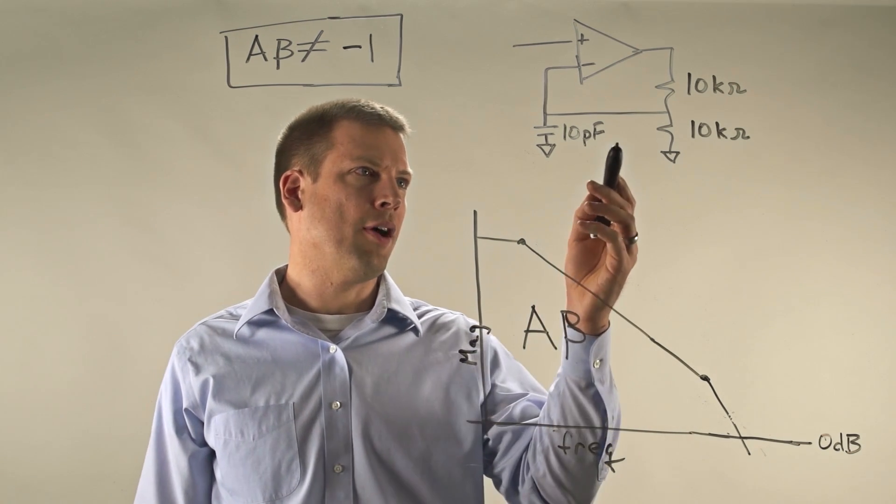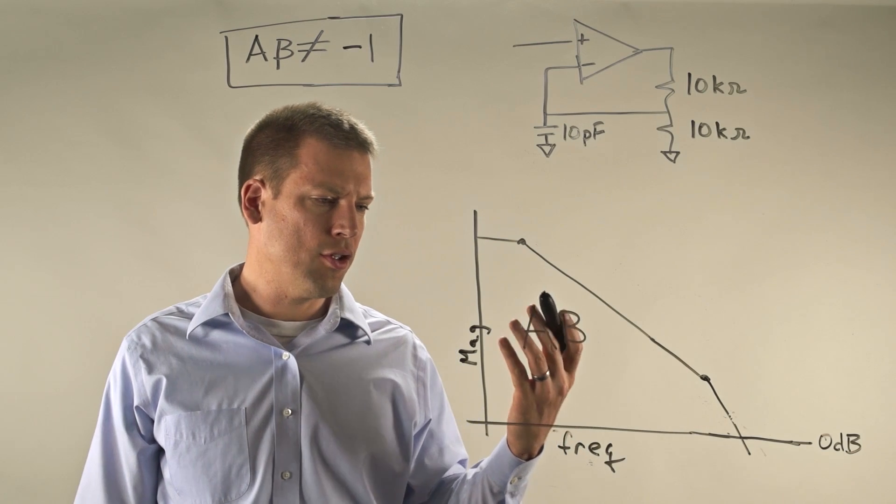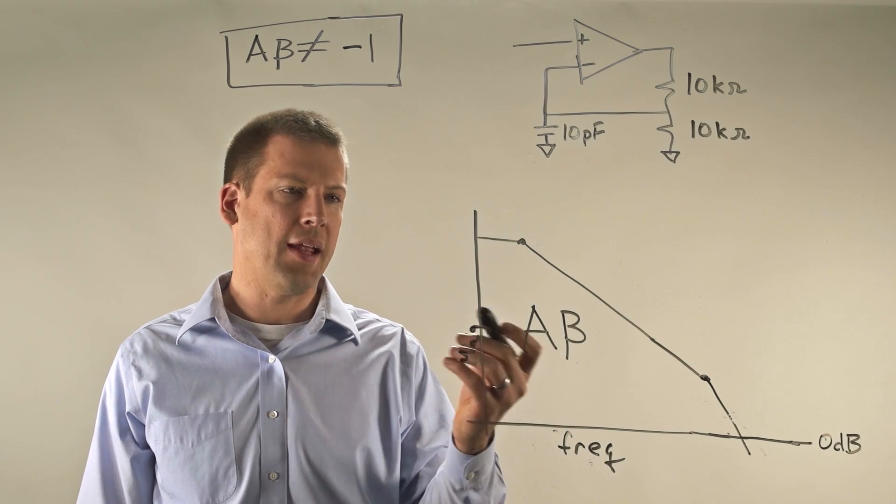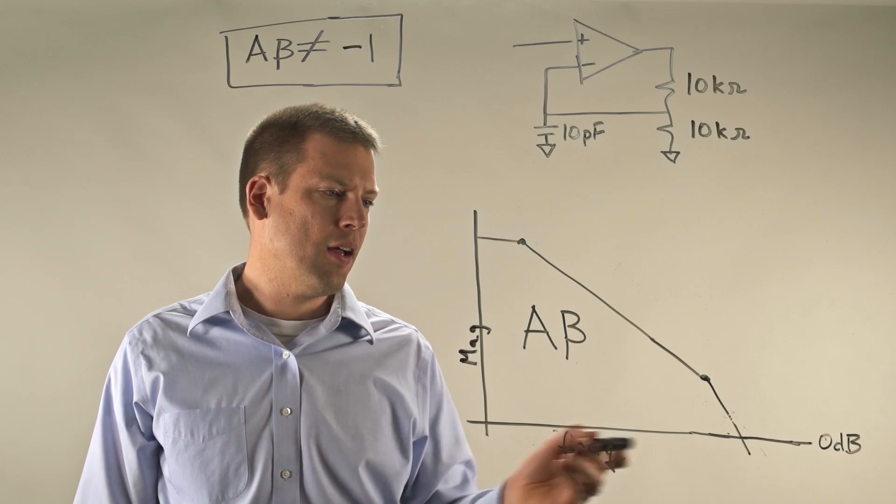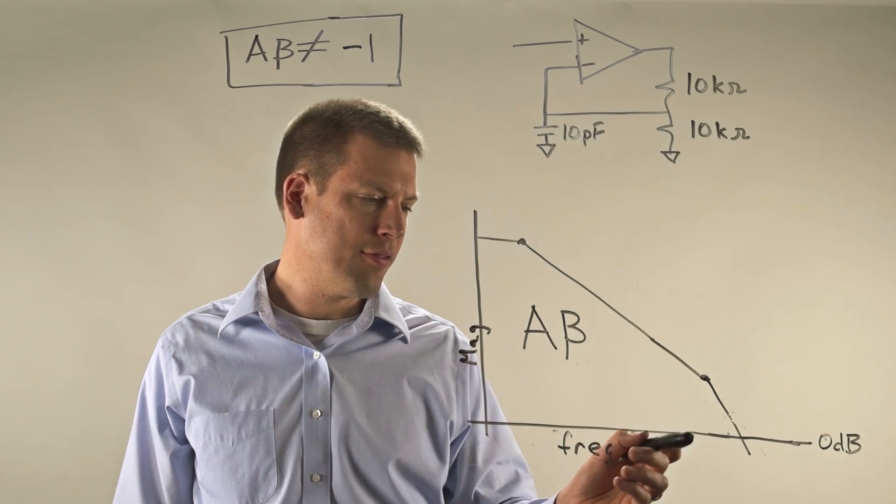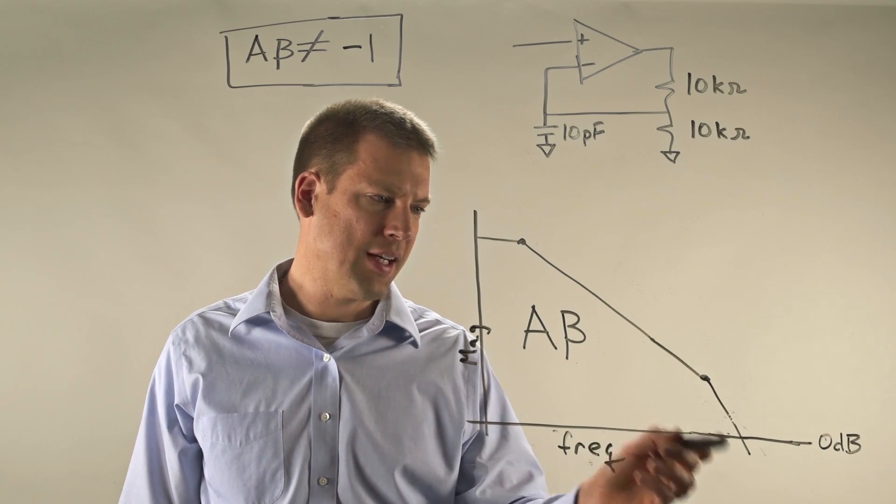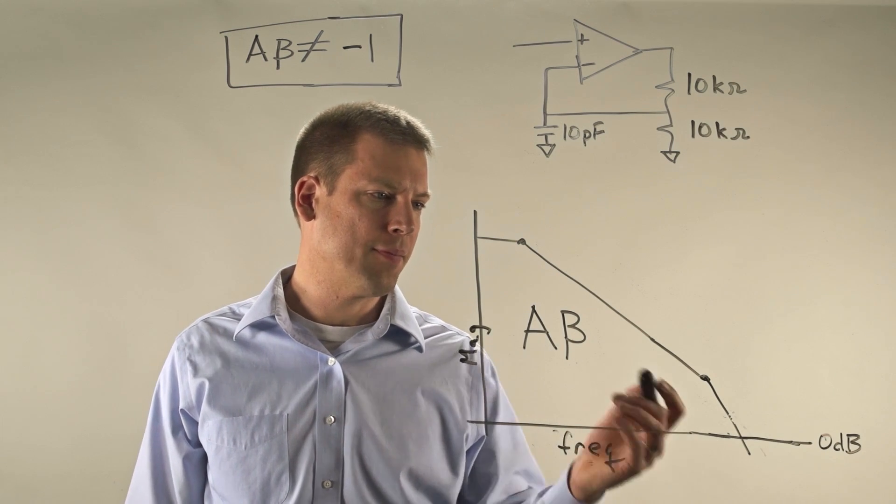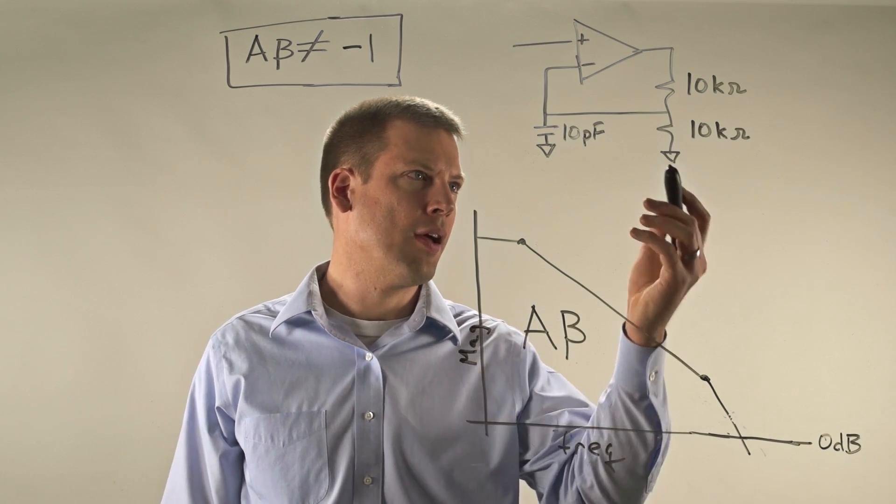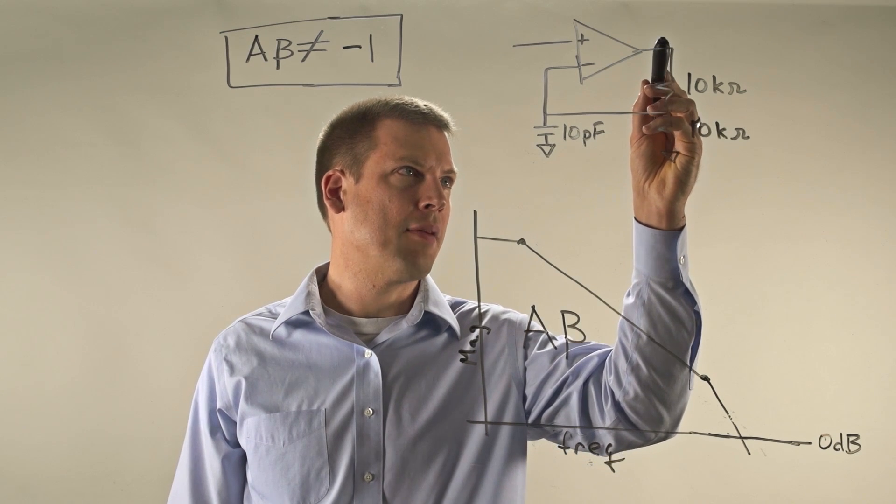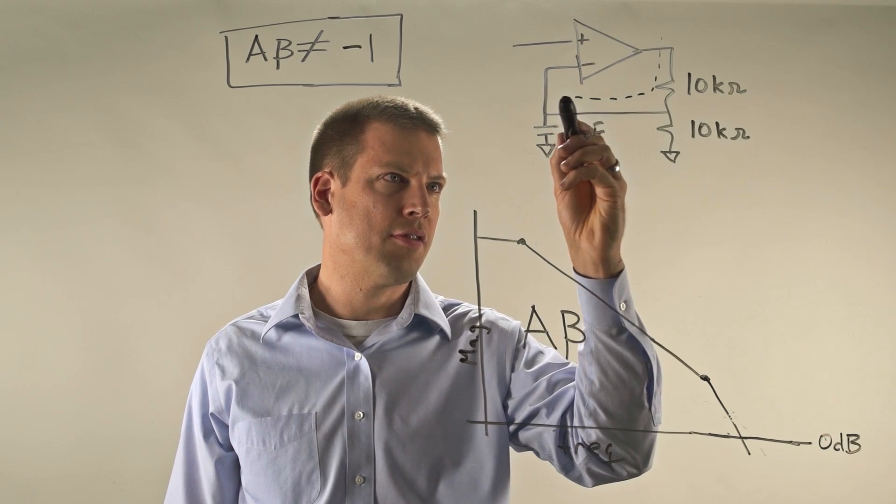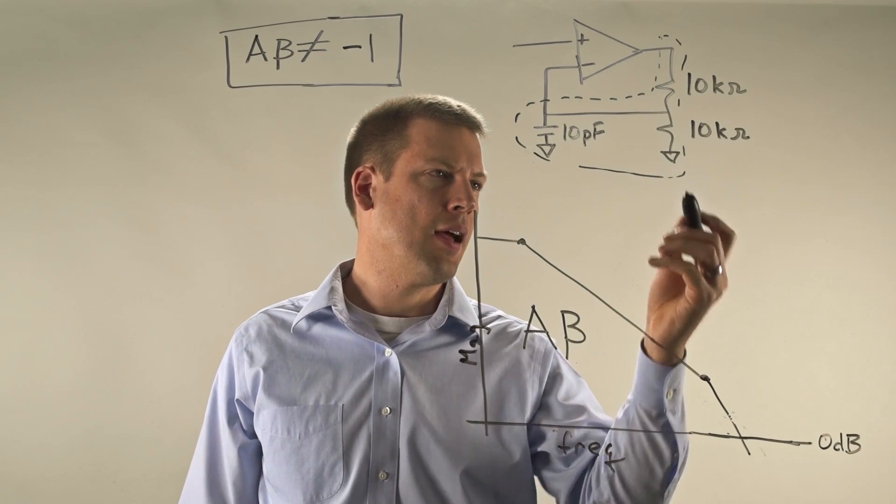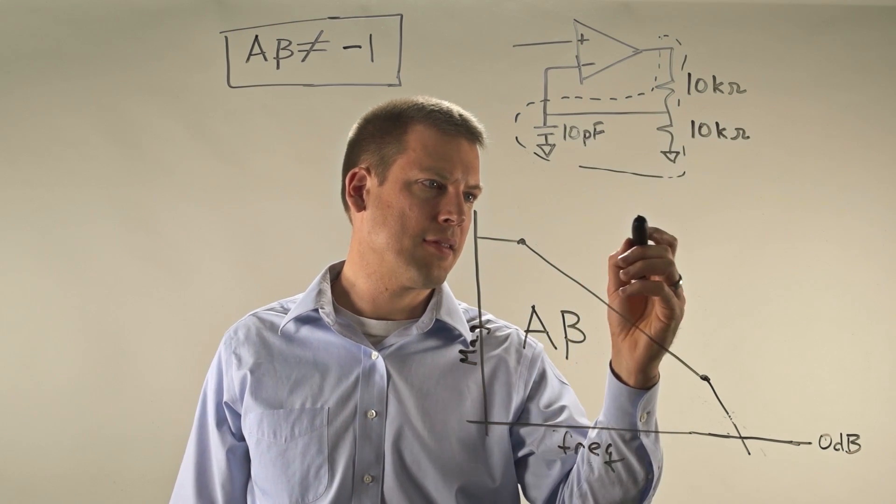So what's happening here? Well, what we want to do, just like we've talked about in all the videos, is we want to keep our loop gain, this A beta. We want to make sure that our graph ends up so we don't have a 40 dB per decade slope when we cross the 0 dB line. So how do we figure that out? What we end up having is a beta that's formed by the feedback formed by these three components here. And this is a resistor divider with capacitance on it.